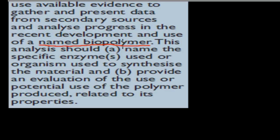We need to name one biopolymer. Part A requires us to talk about how it's produced and what enzymes and bacteria are present. Part B requires us to evaluate what it's used for and relate those uses to its properties — how the properties help make those applications possible.